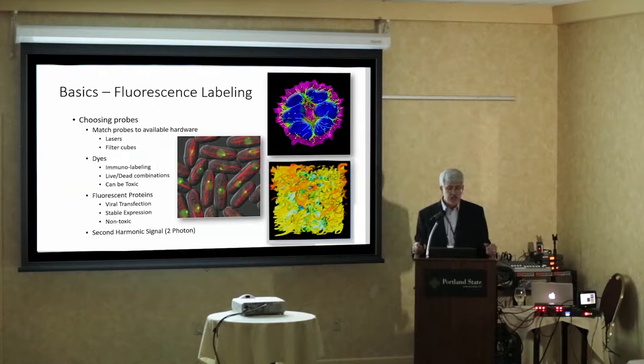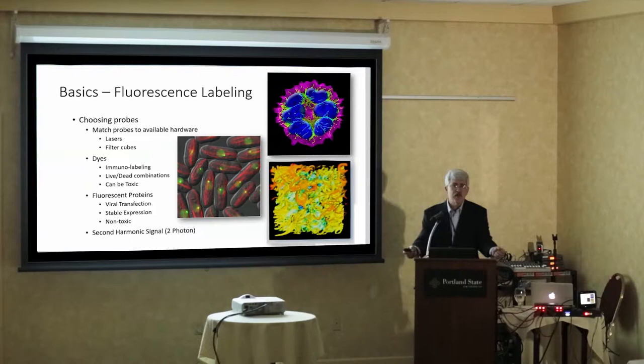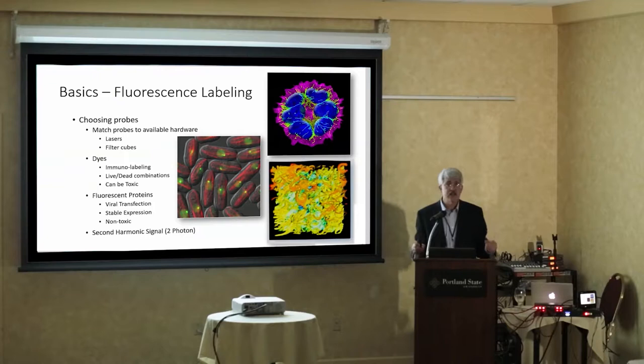There are different kinds of dyes: immunolabeling, live-dead combinations where you can see them if they're live and they change color if they're dead. The big issue with any dye is it can also be toxic, so you can wind up killing your cells by labeling them. Several years ago they invented — and got the Nobel Prize for — green fluorescent protein, which now comes in all kinds of colors. These fluorescent proteins are incorporated into the cell instead of external labeling with dyes via viral transfection, creating a stable expression that's generally non-toxic.